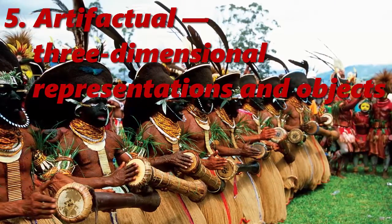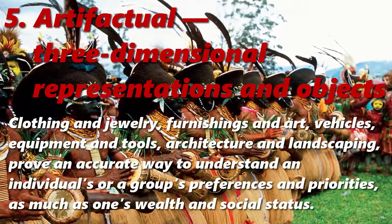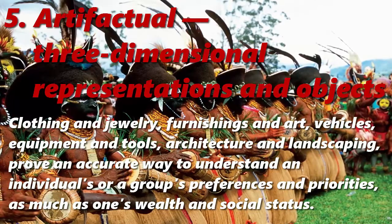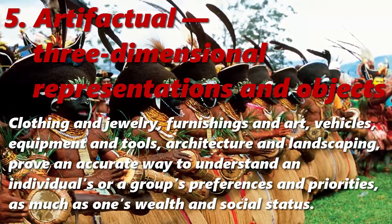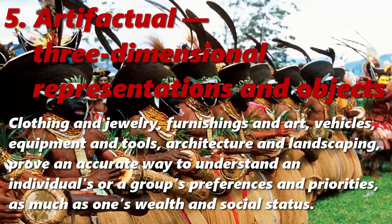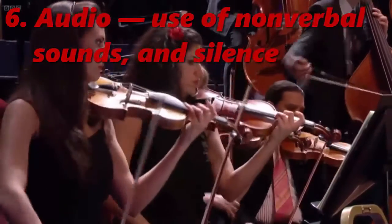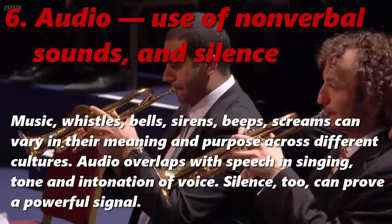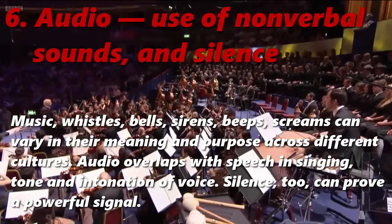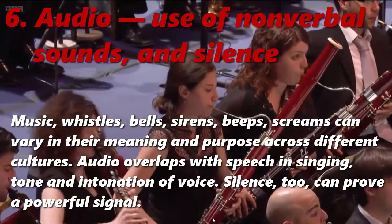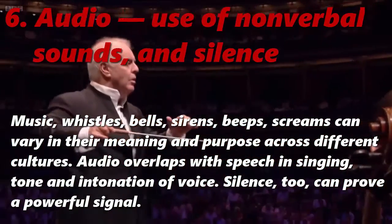5. Artifactual, Three-Dimensional Representations and Objects — the things used in living. Clothing and jewelry, furnishings, and art, vehicles, equipment and tools, architecture, and landscaping prove an accurate way to understand an individual's or a group's preferences and priorities, as much as one's wealth and social status. 6. Audio, Use of Nonverbal Sounds and Silence. Music, whistles, bells, sirens, beeps, and screams can vary in their meaning and purpose across different cultures. Audio overlaps with speech in singing, tone, and intonation of voice. Silence, too, can prove a powerful signal.